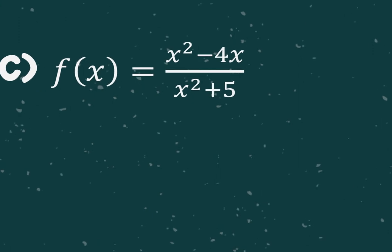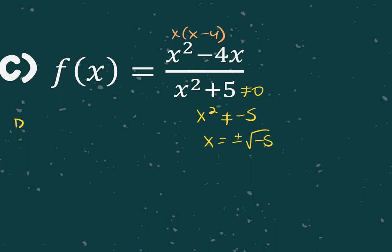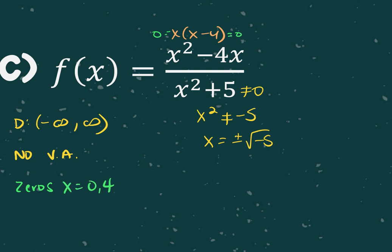For C, I can factor the numerator — I can take out an x. But can I factor the denominator? No. If I want to find the domain, I set it not equal to zero and get x squared cannot equal negative five, so x equals plus and minus the square root of negative five. Does that exist? No. So there is no domain restriction — domain would be all real numbers, which means there would be no vertical asymptotes. The zeros from the numerator are x equals zero and x equals four. The horizontal asymptote is y equals one.